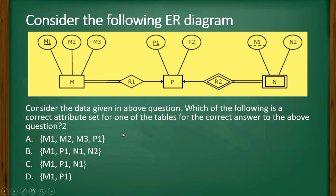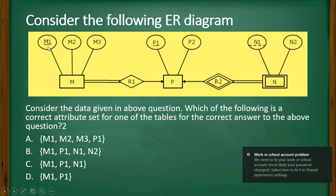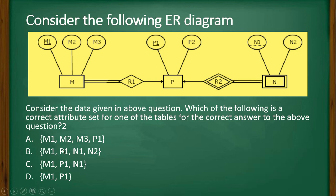Now, according to our previous discussion, the three tables we are going to create. Now, the first table for M will have definitely these three attributes and one more, that is the primary key of P. So it is going to be M1, M2, M3, and P1. So this is the correct one. So A is the answer.